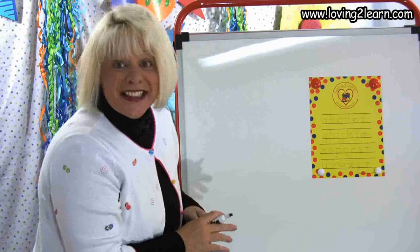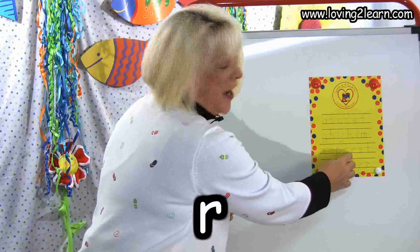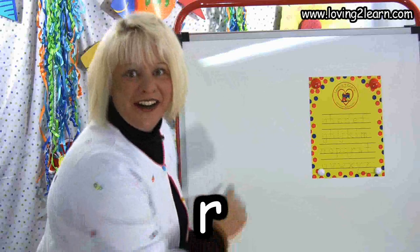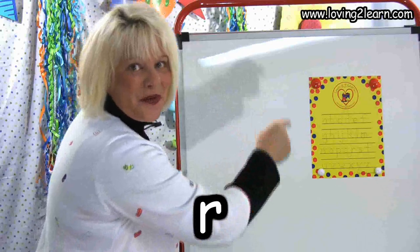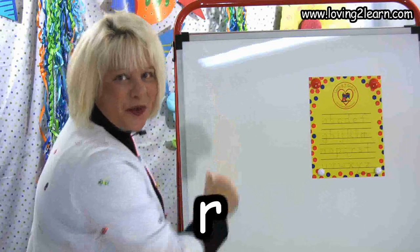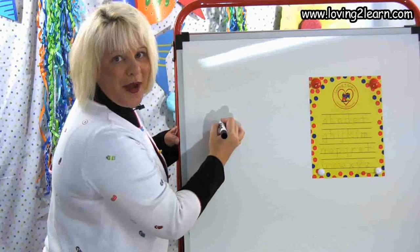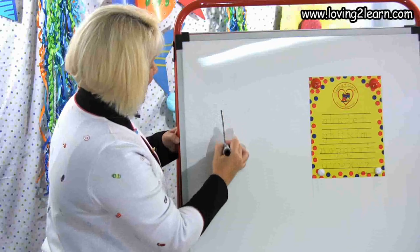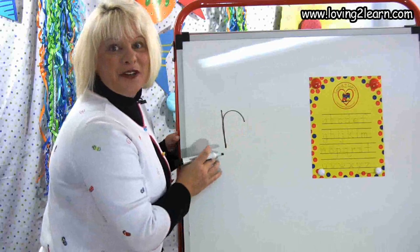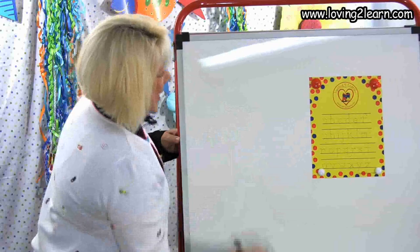The next letter is the letter R. R, we go straight line down and a roof on top. Let's do it in the air: straight line down and a roof on top. We'll erase that R.